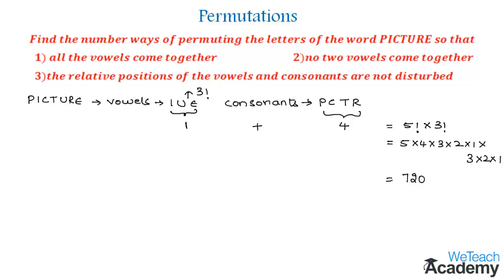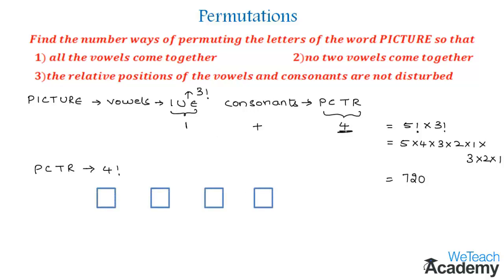Now for the second condition — no two vowels should come together. First, we arrange the four consonants in four factorial ways. These give four positions, and in between them (including the ends) there are five gaps where the vowels can be placed. So the three vowels are arranged in those five positions in 5P3 ways. Thus the number of words in which no two vowels come together is 4! × 5P3.